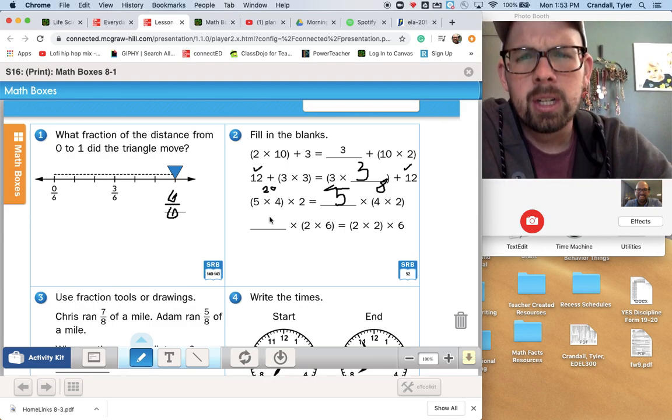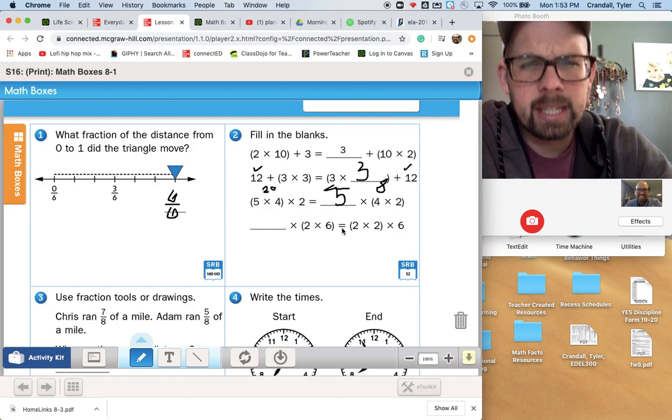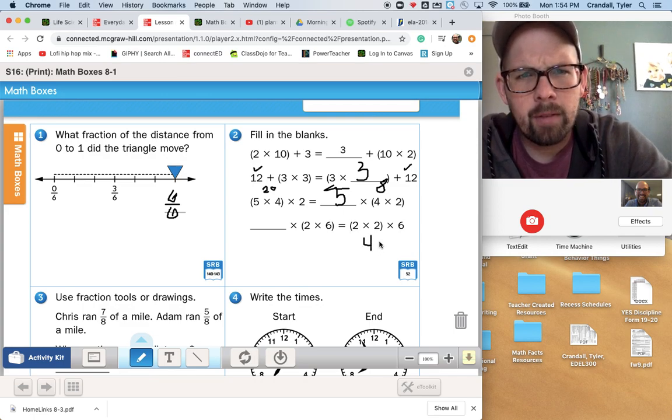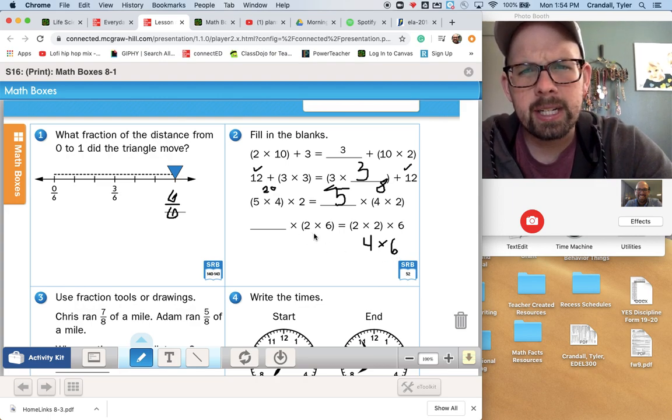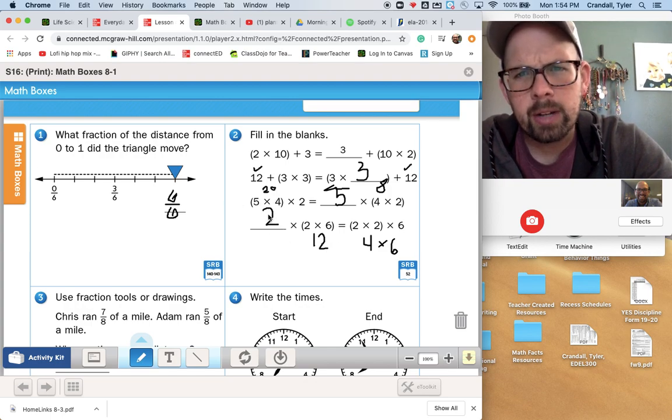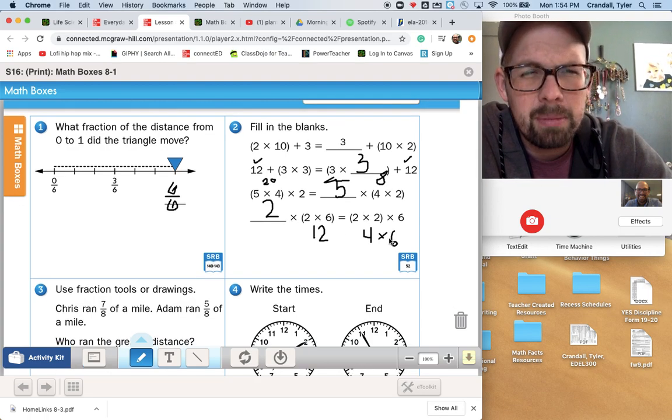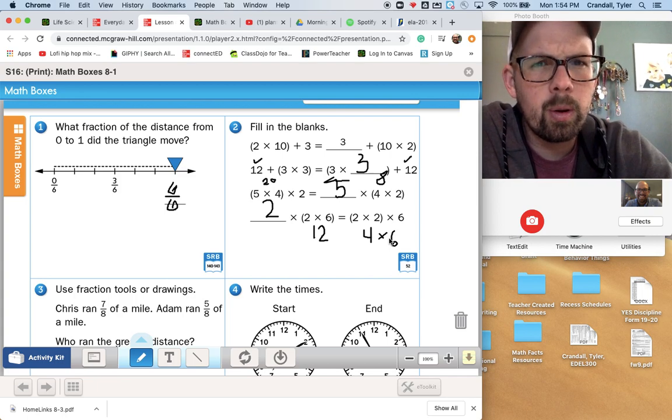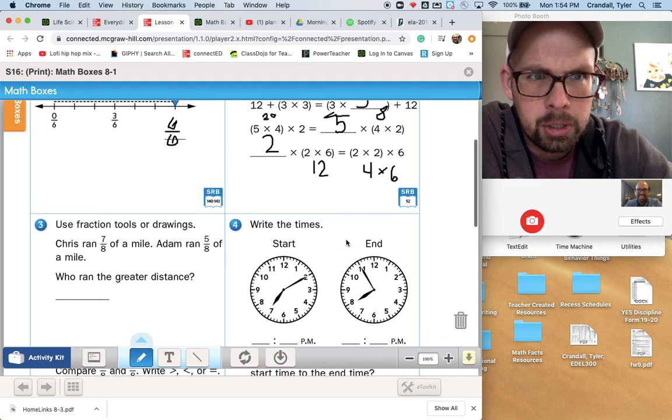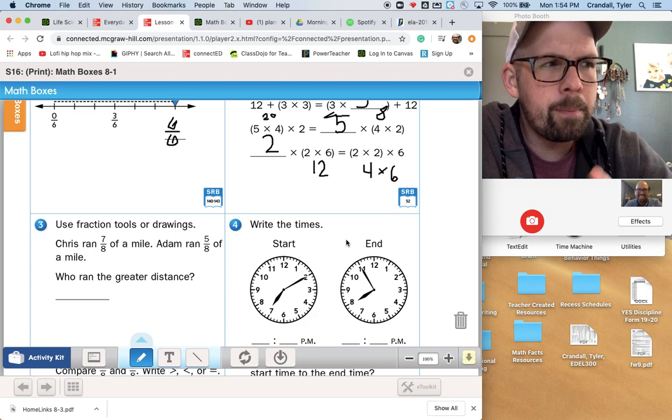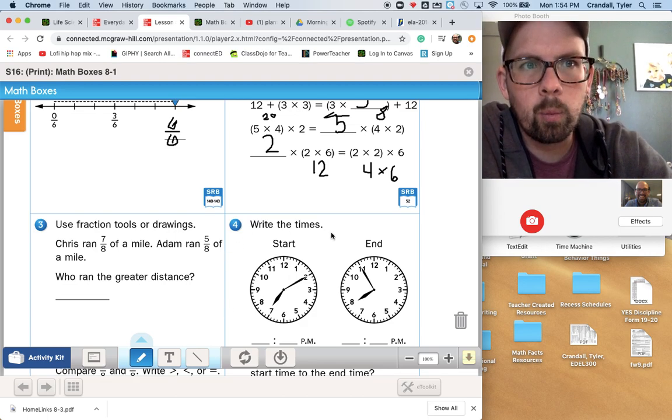Last problem says something times 2 times 6 is the same thing as 2 times 2 times 6. 2 times 2 is 4, and 4 times 6 is 24. On this side, 2 times 6 is in parentheses. That's 12. Something times 12 equals 24. That's also 2. And when I read it, 2 times 2 times 6, 2 times 2 times 6. Because of the commutative property of multiplication, you can multiply in any order. So it doesn't really matter about the parentheses as much. When you're doing addition and subtraction, when you're doing mixed operations, it does matter a lot what the parentheses say.